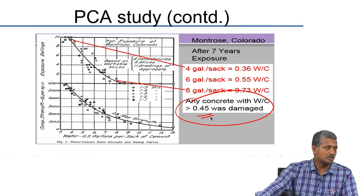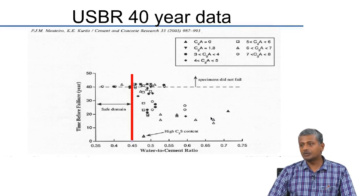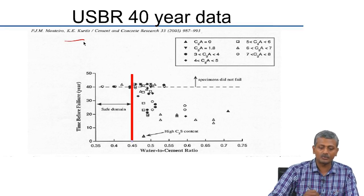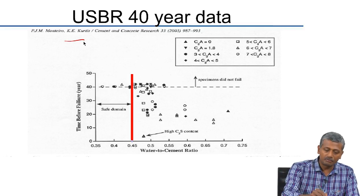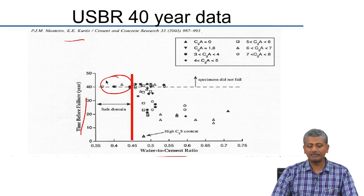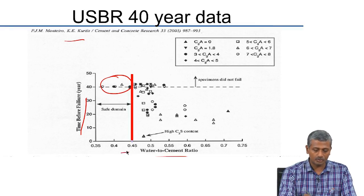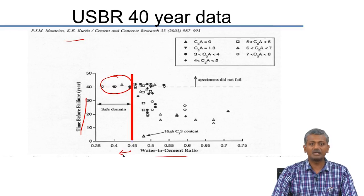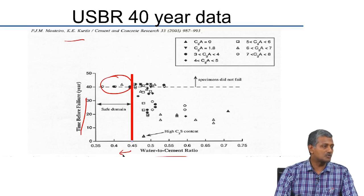In terms of protection of concrete against sulphate, the first thing prescribed in specifications is reduction of water-cement ratio to less than 0.45. This same data was analysed later by researchers at University of California Berkeley, who showed that the concretes safe even after 40 years — irrespective of C3A content — all had water-cement ratios less than 0.45. So even with a high C3A cement, if the water-cement ratio is kept below 0.45, performance was still very good.